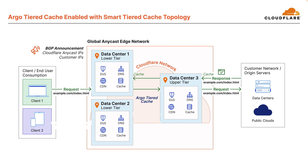Now, let's say client 2 makes a request for the same content to data center 2. If the content is not cached at data center 2, similar to prior, the upper tier data center is checked. However, in this case, content was requested prior via client 1 and the upper tier data center has the content cached and returns the cached content to the lower tier data center — data center 2 — which in turn caches the content and responds back to the client, decreasing latency, saving bandwidth and load on the server, and providing better overall performance.